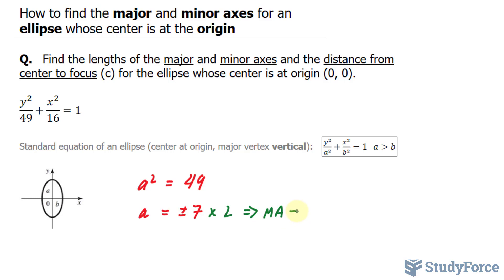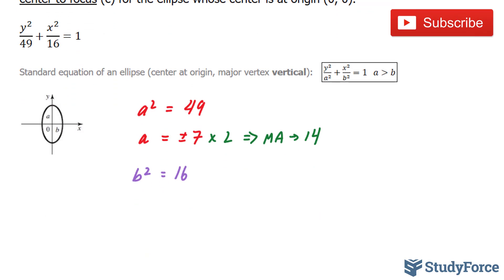Also from this formula, I can derive b. b squared is equal to 16, the lesser of my two numbers. Square rooting 16, I end up with b is equal to 4. This will serve as my semi-minor axis.